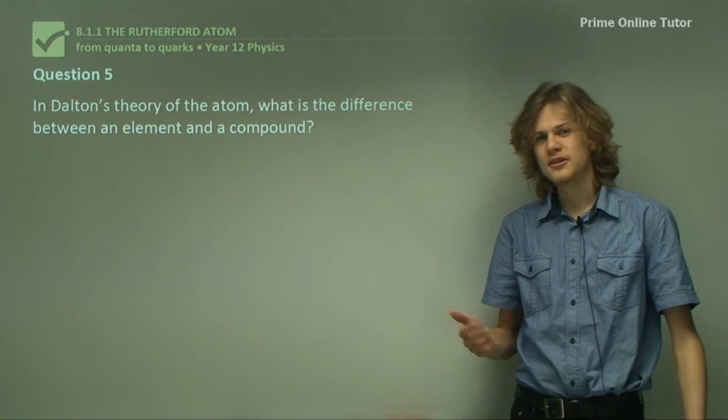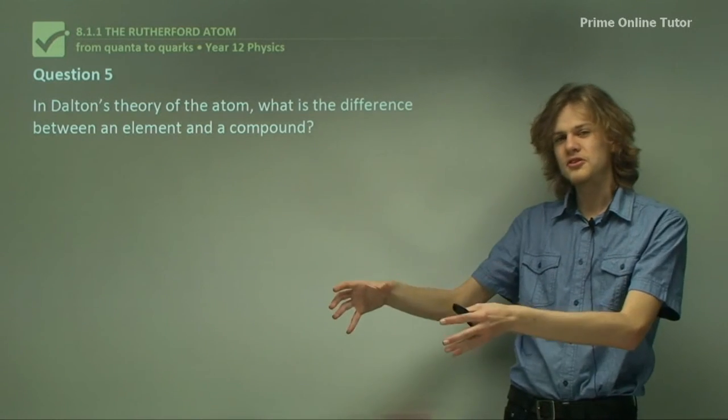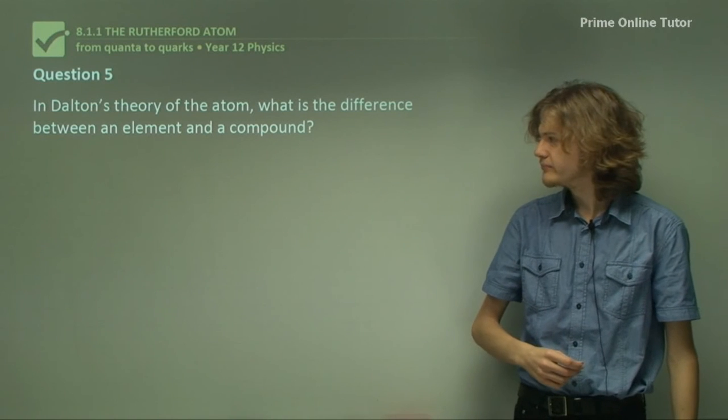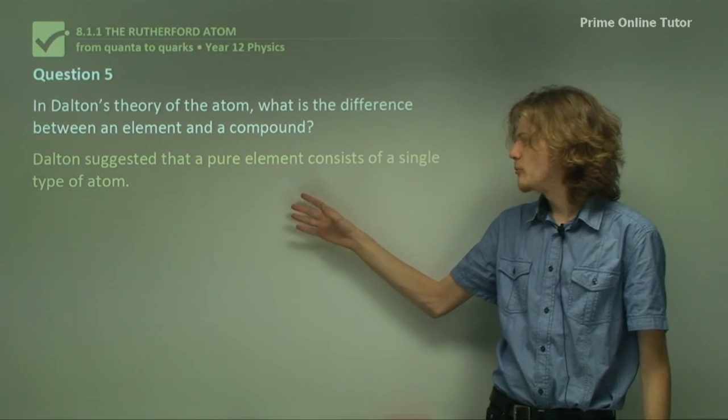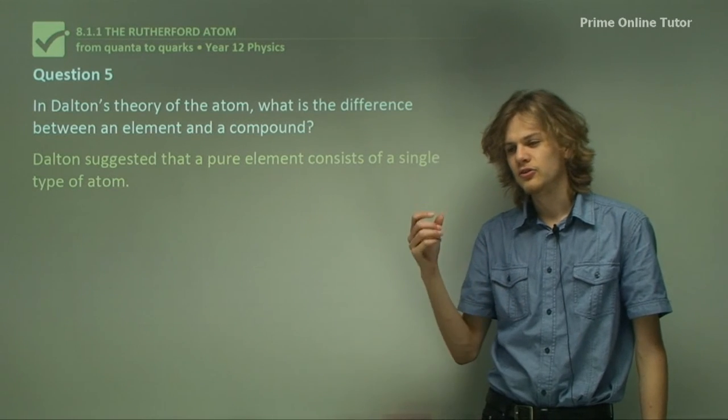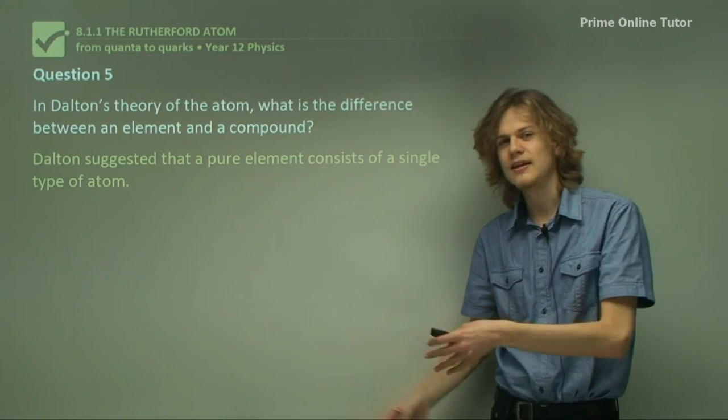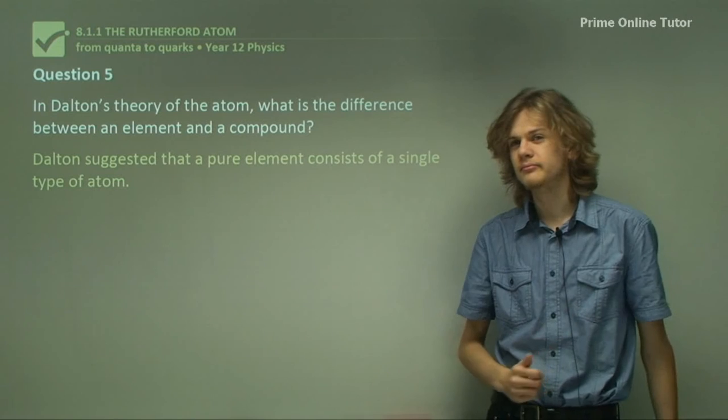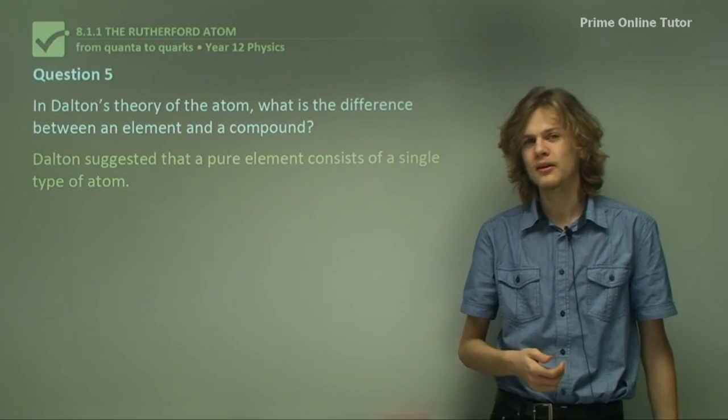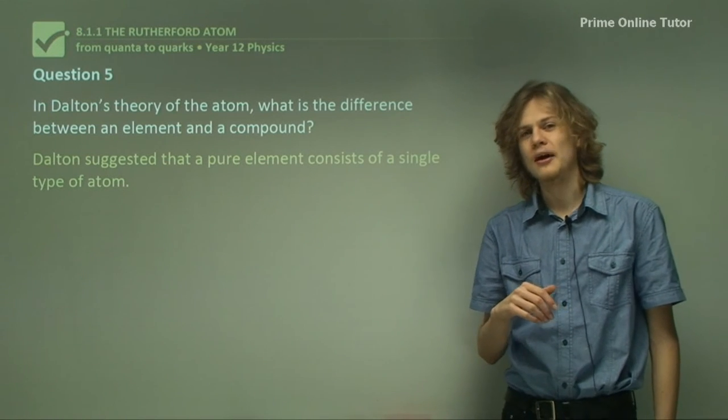So the difference is basically that an element consists of one type, and a compound consists of more than one type of atom. So Dalton suggested that a pure element consists of a single type of atom. So he suggested that oxygen gas contains lots and lots of oxygen atoms. In fact, we know now that it consists of pairs of oxygen atoms called molecules. But we don't need to go into that right now.